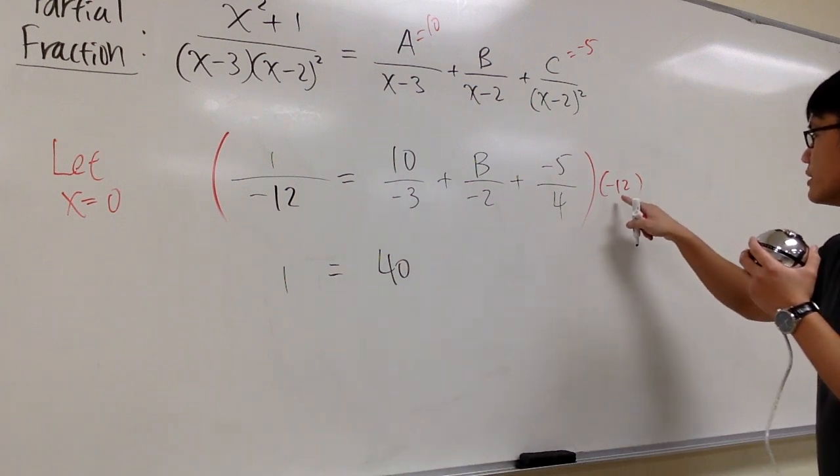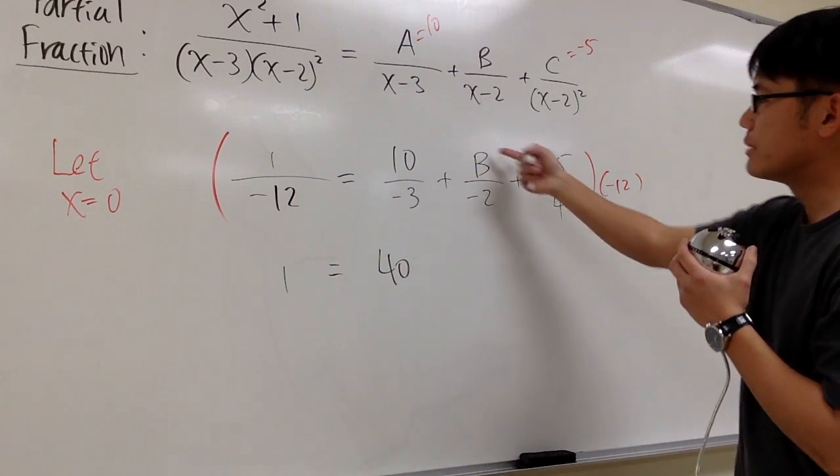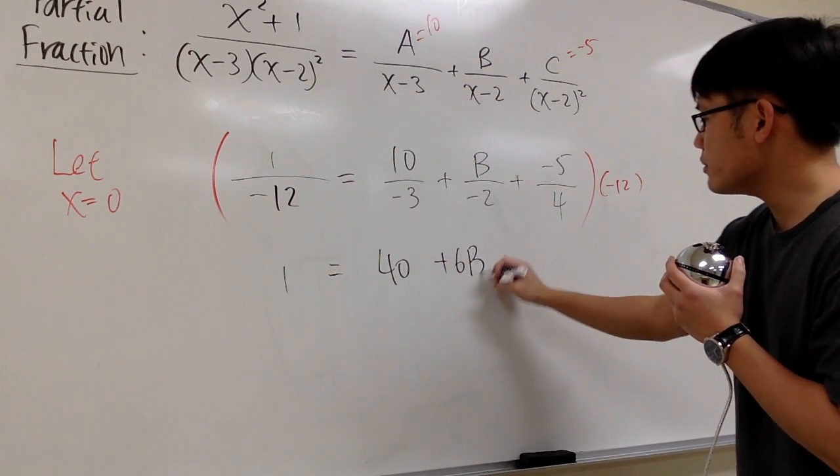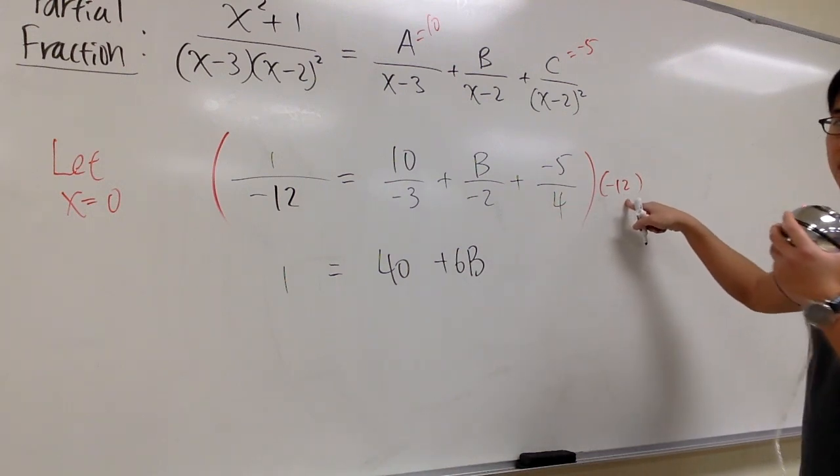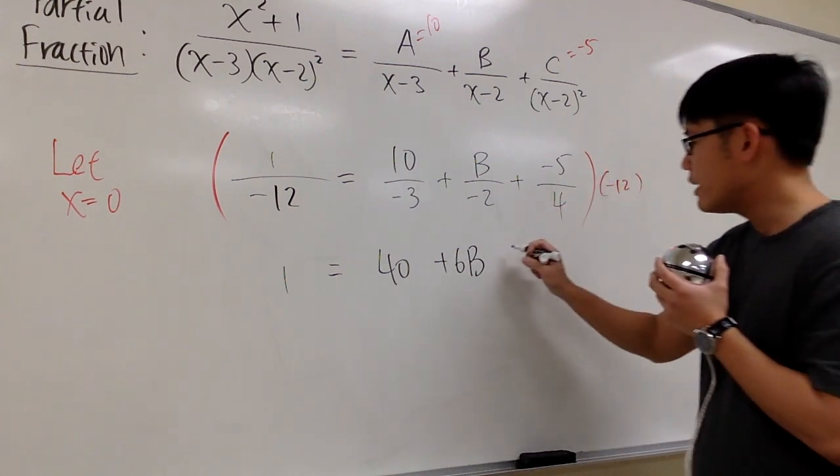Negative 2 cancels out with negative 12, we get 6. 6 times B, we get plus 6B. This cancels out, we have negative 3. Negative 3 times negative 5, we get plus 15.